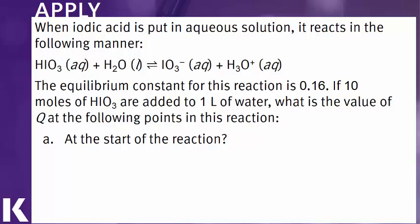The first thing that we need to do is to write out a Q expression for this reaction. So we'll start with our concentration of products. We have IO3-, we have H3O+, and in our reactants, we have HIO3, and we also have water. Now, water is a pure liquid, so we do not include it in the Q expression.